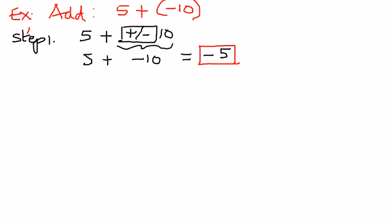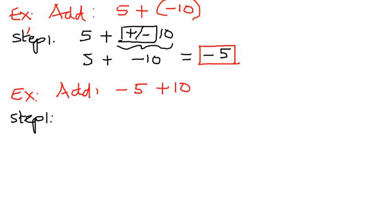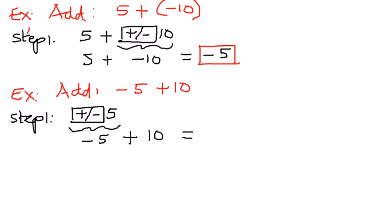Let's look at a couple more examples. This time, we want to add negative 5 plus 10. To enter negative 5, you're going to press the positive/negative button first and then enter 5 — the calculator will display negative 5. Then enter the positive number 10. The calculator is going to display 5, which is a positive 5. So negative 5 plus 10 equals positive 5.